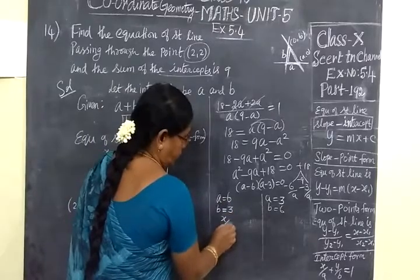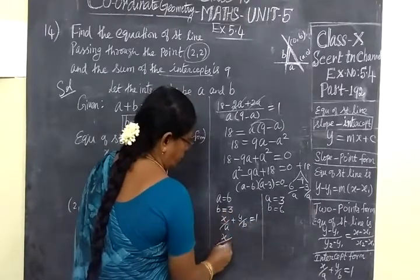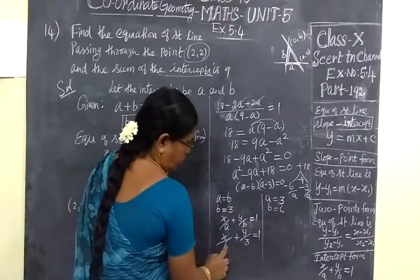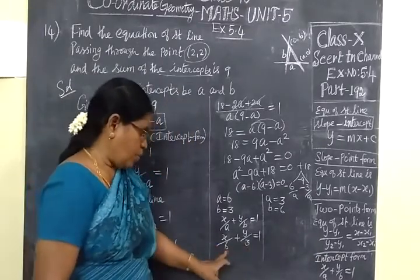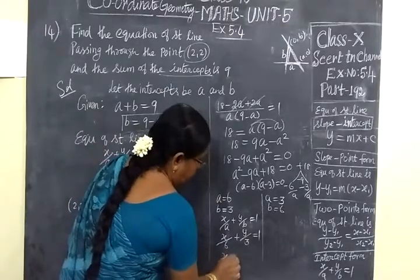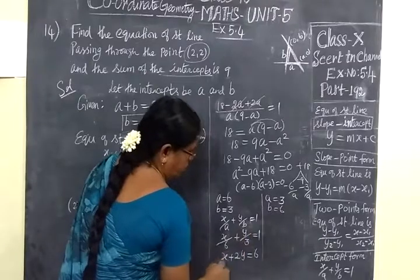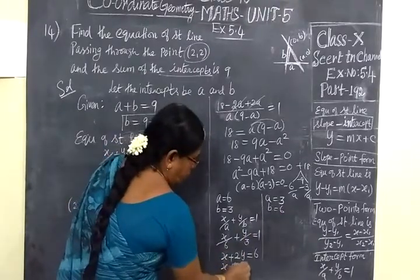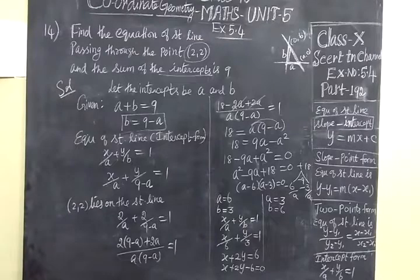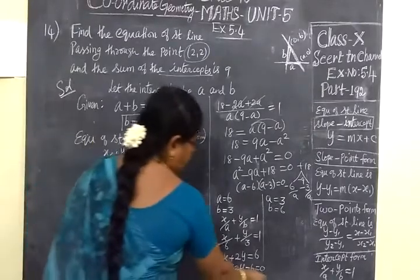So equation of straight line, X by A plus Y by B equal to 1. So X by 6 plus Y by 3 equal to 1. Take LCM as 6. So X plus 2Y equal to 6. This is the equation, X plus 2Y minus 6 equal to 0.